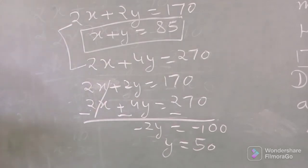y हमने suppose किया था cows, तो cows की number हुई 50. अब इस y की value को हम किसी भी equation में place कर दें. तो equation x plus y equals 85, y के place पर 50, so x plus 50 equals 85, x equals 85 minus 50.